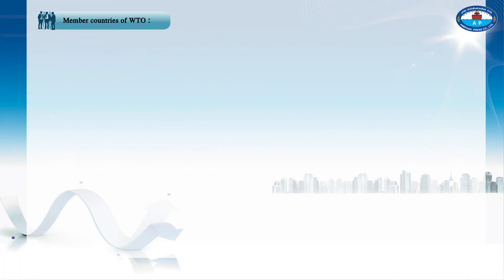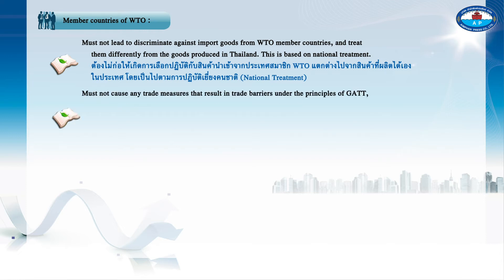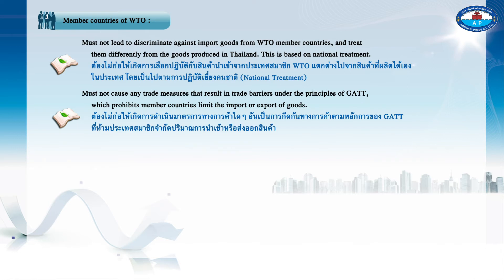Member countries of WTO must not discriminate against imported goods from WTO member countries and must treat them no differently from goods produced domestically in Thailand. This is based on the principle of national treatment. They must also not cause any trade measures that result in trade barriers under the principles of GATT, which prohibits member countries from limiting the import or export of goods.